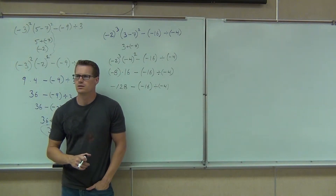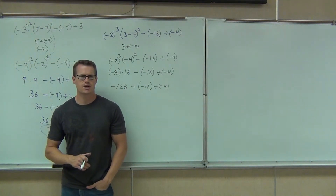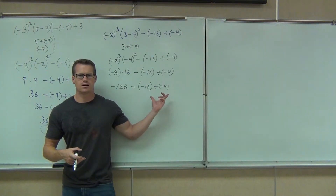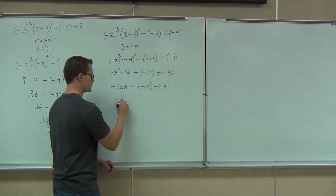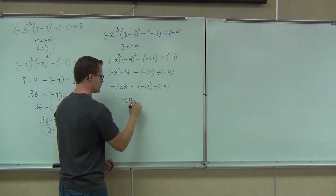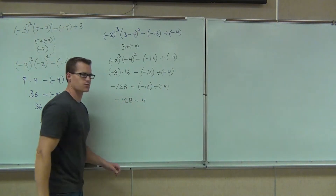What's next? The division. Let's do our division together. We've got negative 16 divided by negative 4. Are we going to get a positive or a negative out of that? Positive. How much? Four. Minus four.